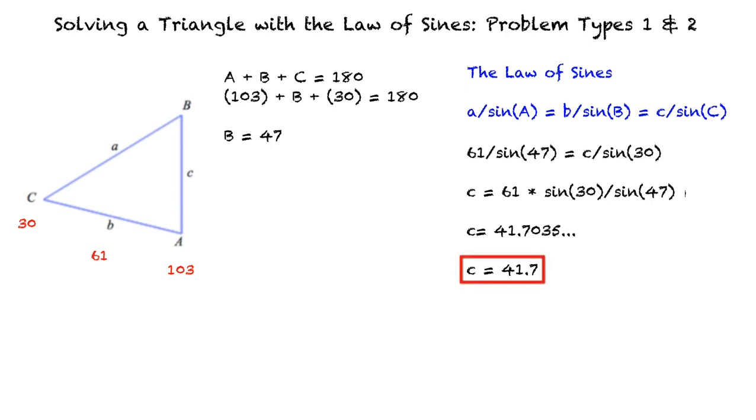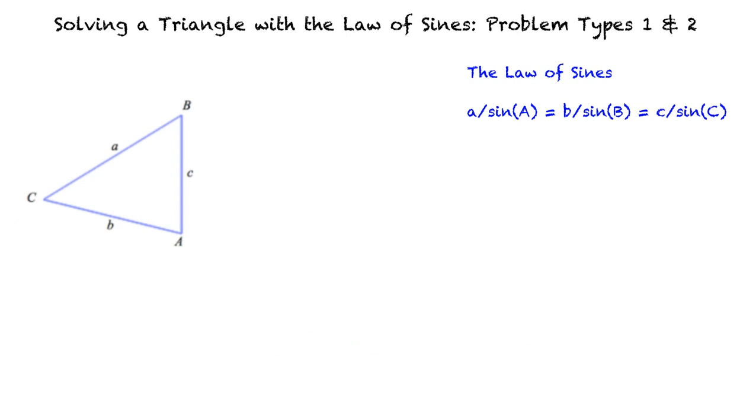C equals approximately 41.7. This gives us the final answer of B equals 47 degrees, a equals 81.3, and c equals 41.7. Can we try another example problem? Of course.